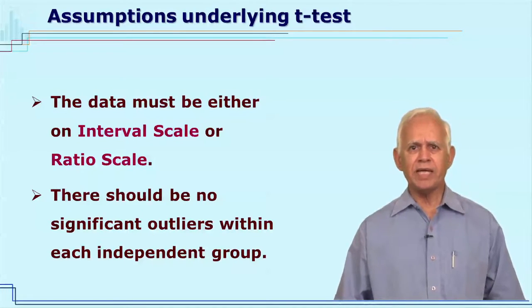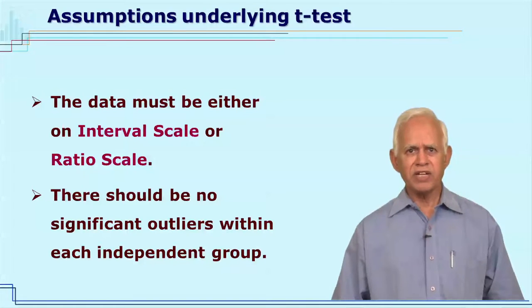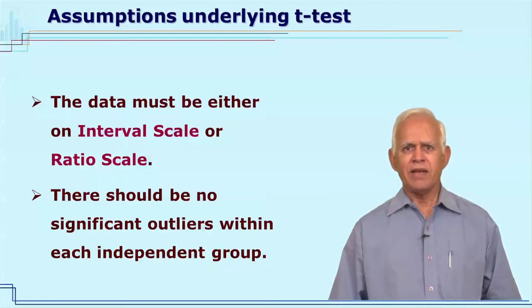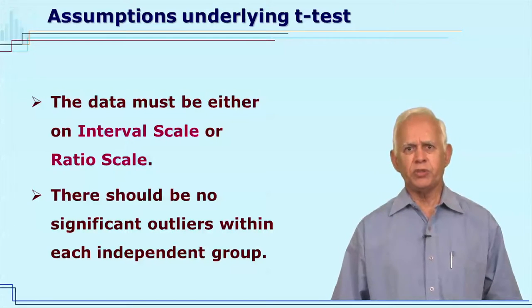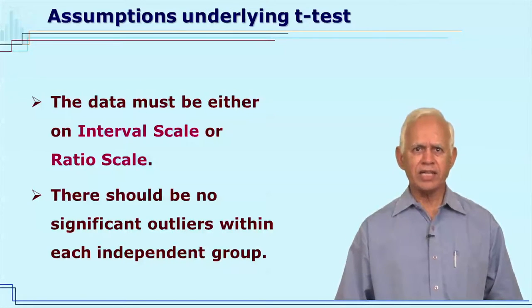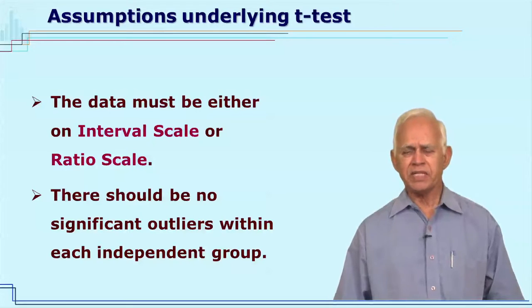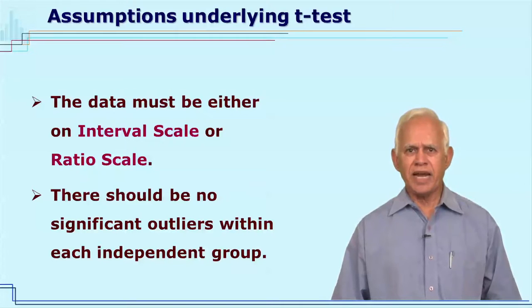Another assumption is that the data must be either on an interval scale or ratio scale. If you have data on the nominal or ordinal scale, then the t-test cannot be used. The last assumption is that there should not be any outliers — that means extreme values or extreme data should not be present.